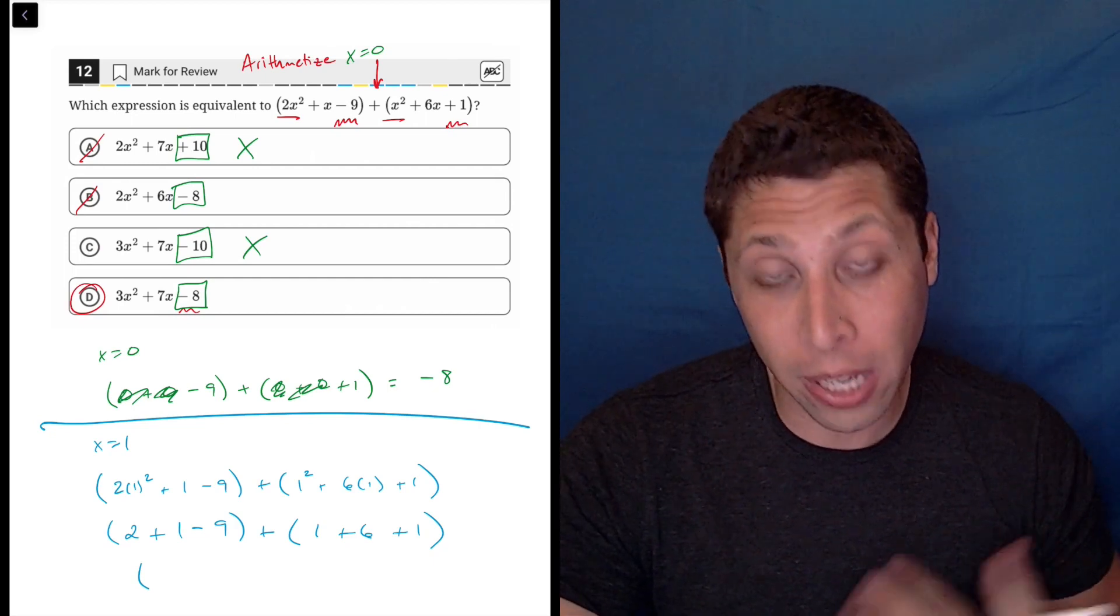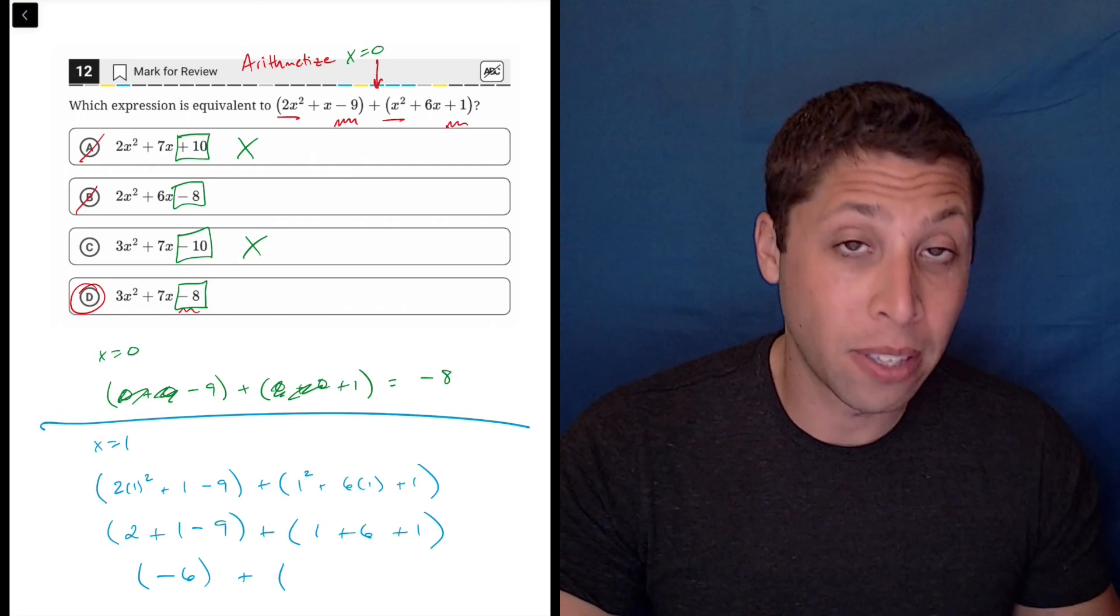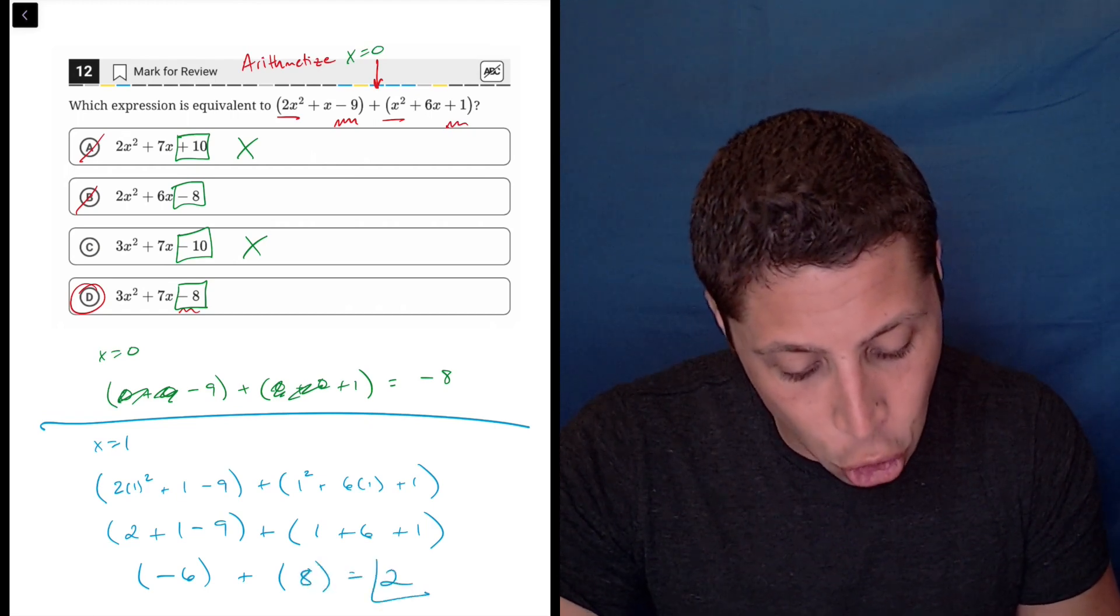So 2 plus 1 is 3, 3 minus 9 is negative 6, 1 plus 6 is 7, 7 plus 1 is 8. So negative 6 plus 8 is 2.